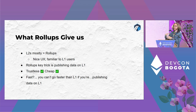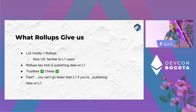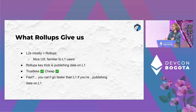By publishing data on layer one, we can claim these things are trustless and inherit L1 security. All the other work — processing a transaction, validating it, updating state — happens in a separate environment. We're not using layer one resources, so we can make things cheaper. So by publishing data on layer one we get trustlessness and cheaper transactions.